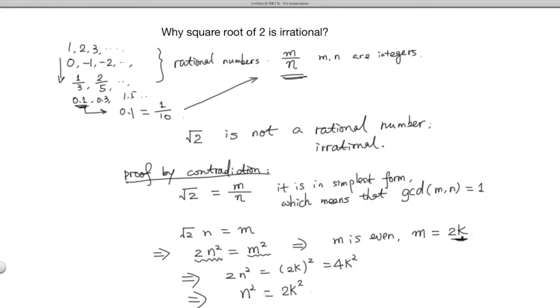So because the right side is an even number, that means the left side has to be an even number, so that means n is even as well.